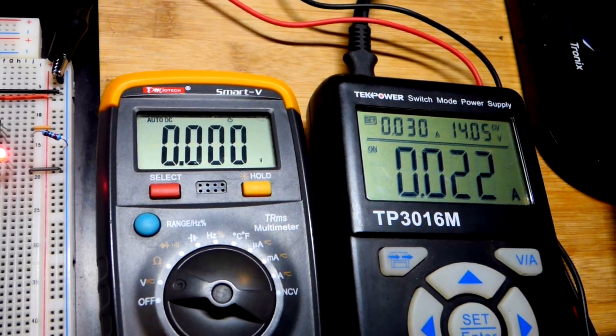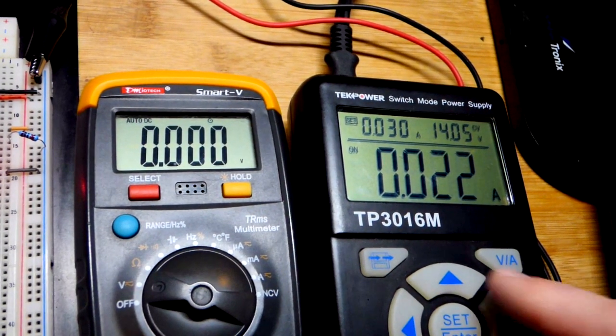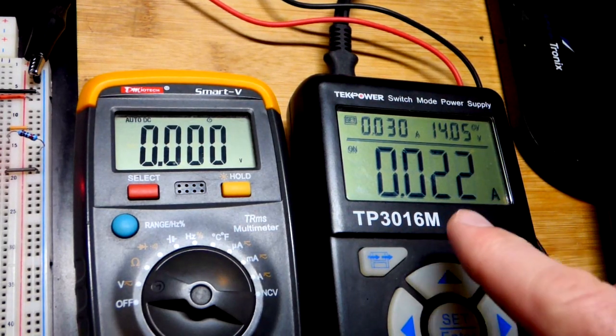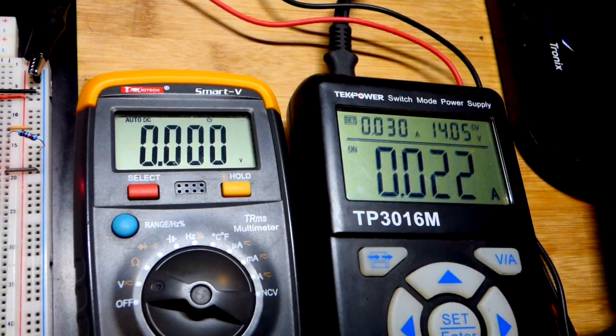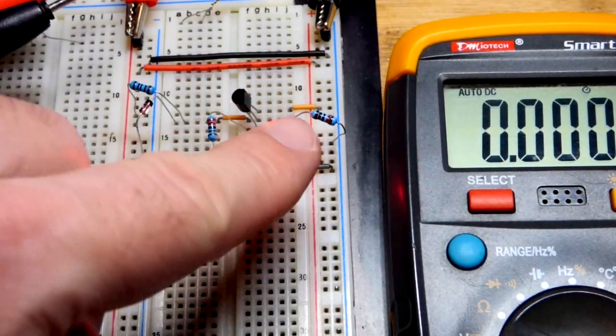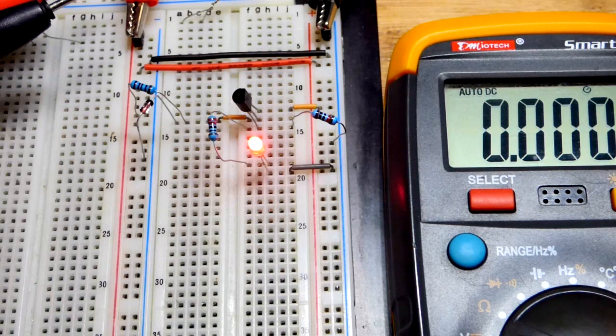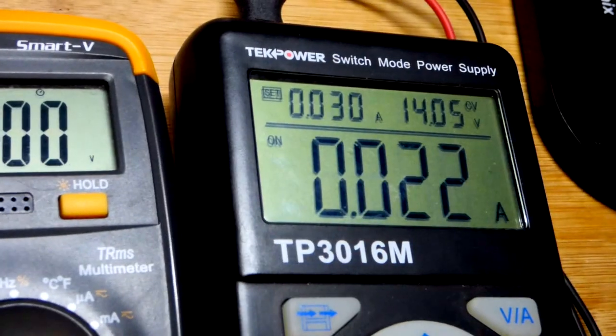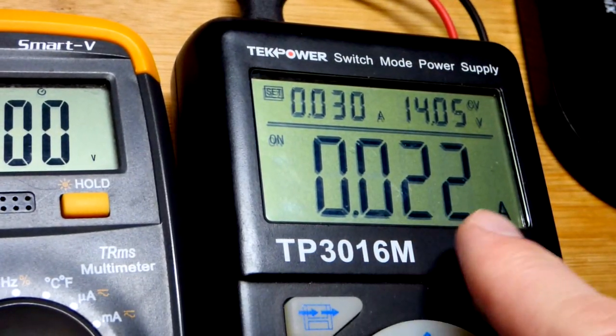So this is pretty close to the maximum voltage we should do. So that current that we see is through the LED plus through the 1 kilo ohm resistor setting the current for the Zener diode. And this may even make it move.